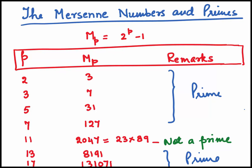When we take p to be 5, we get Mp as 31. When we take p to be 7, we get Mp as 127. All of them are prime. You can see that. So for p value from 2 to 7, we get Mersenne Primes.